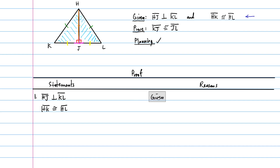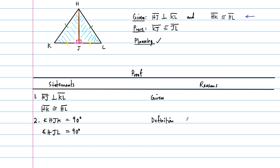We've taken care of the perpendicular and the congruent sides being given. The next thing we need to do is get the right angles in here. We need to say that these two angles are right angles. So angle HJK equals 90 degrees, and similarly angle HJL equals 90 degrees — you can say they are right angles. The reason here is just the definition of perpendicular. Notice I'm using symbols in my statements but writing out more detail for my reasons.